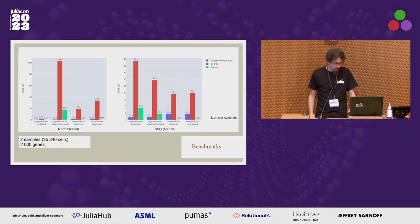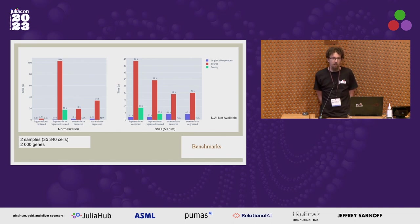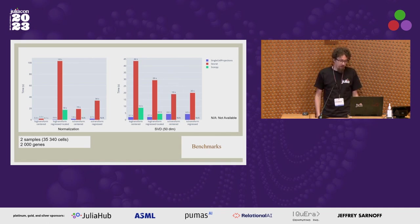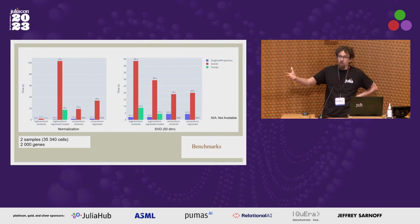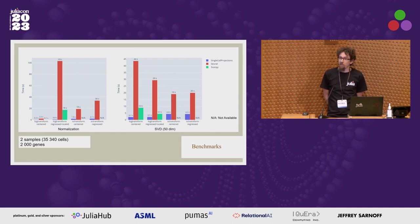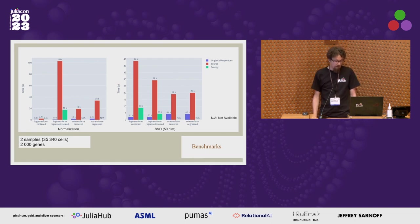Looking at benchmarks: in the standard use case for other packages, one of the first steps is to throw away almost all genes to make the data more manageable. Comparing to that, SingleCellProjections.jl in blue is rather fast and well-behaved for the two key steps — the normalization step and the principal component analysis. This covers both with and without regression, and log transform versus a more advanced transform.